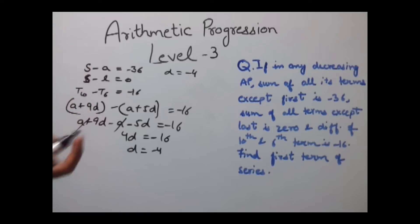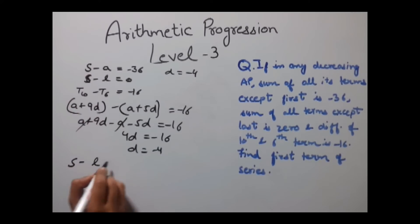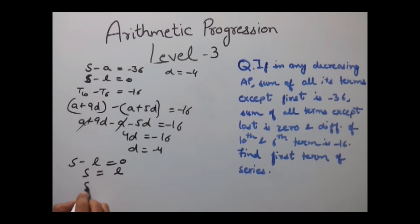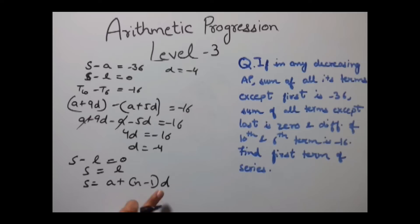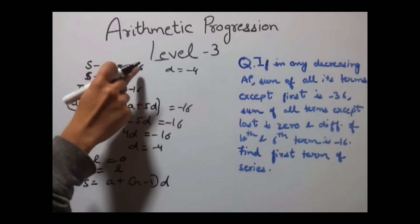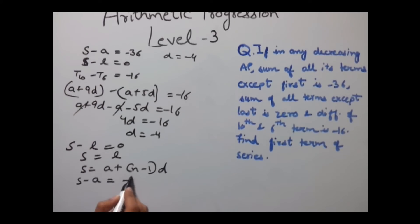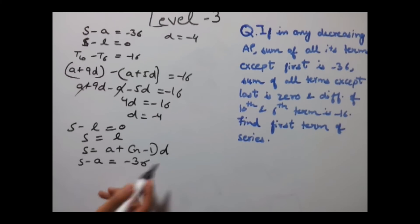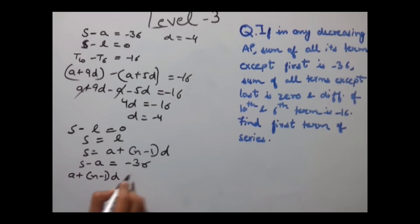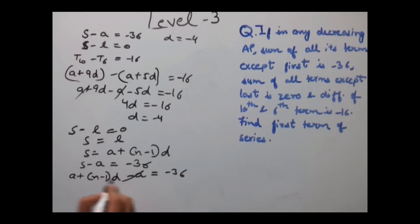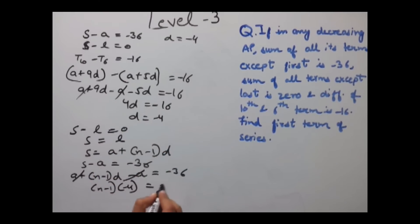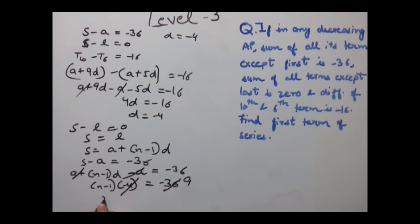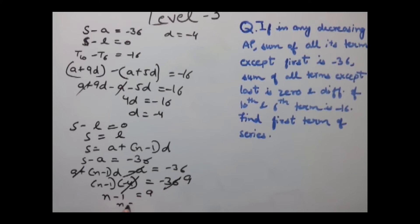Using the second equation S − l = 0, we get S = l. Since l = a + (n−1)d, we have S = a + (n−1)d. Substituting into S − a = −36: (a + (n−1)d) − a = −36, so (n−1)(−4) = −36, giving n − 1 = 9 and n = 10.